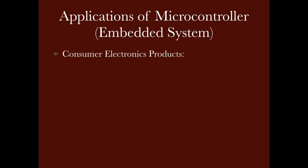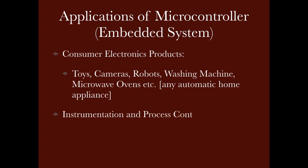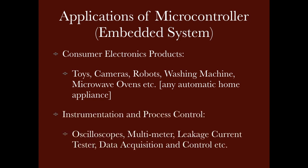The best example of embedded systems is consumer electronic products where microcontrollers are used. Toys, cameras, robots, all home appliances like washing machines and microwave ovens — all use microcontrollers. Instrumentation and process control also uses microcontrollers — instruments in the lab like oscilloscopes and multimeters all have microcontrollers inside them.